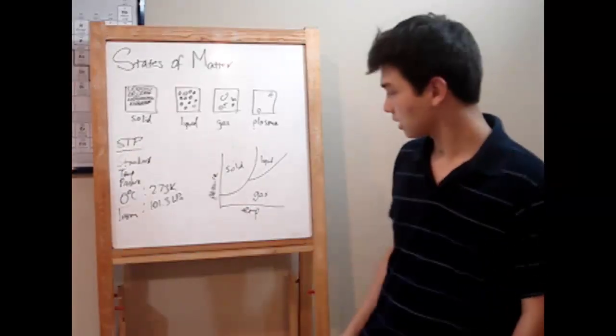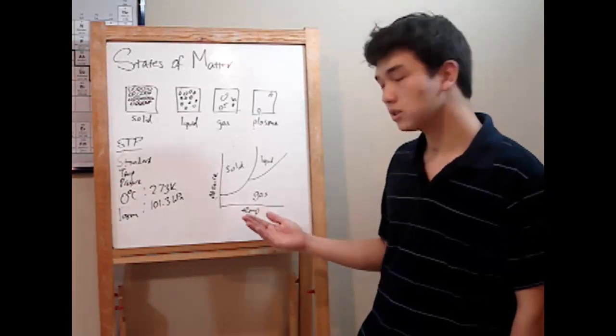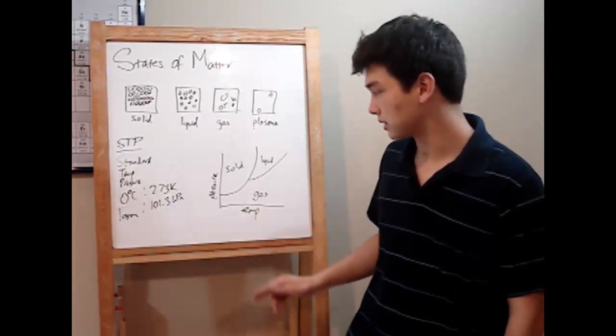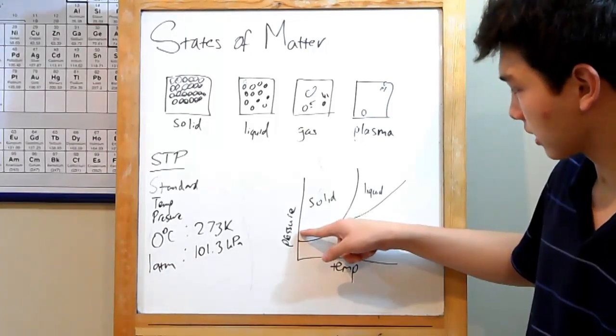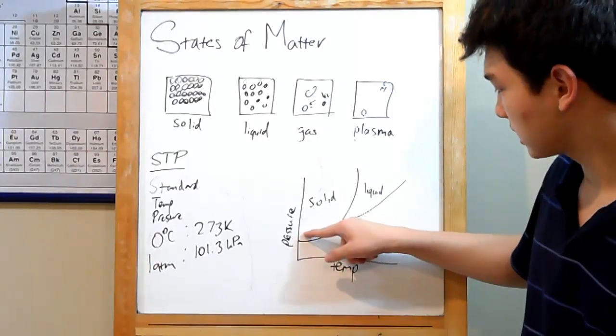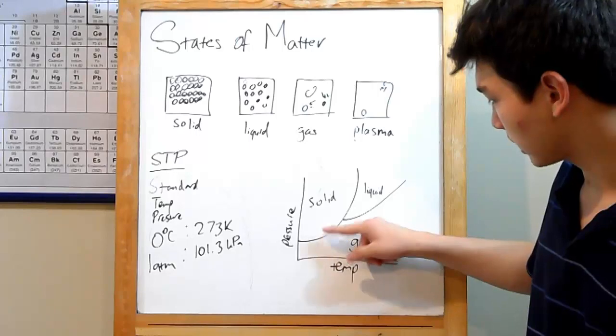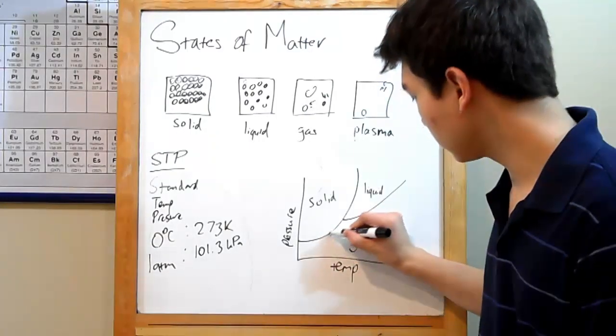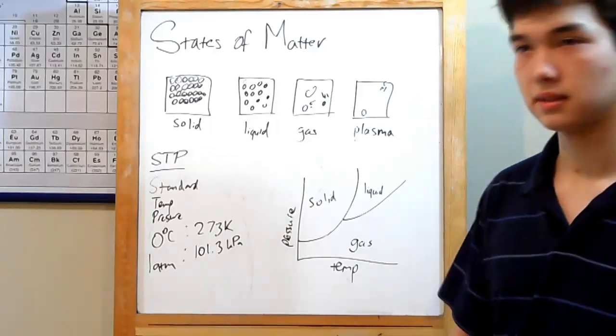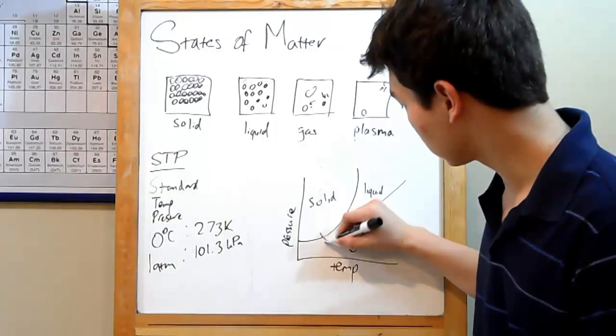How to read this thing? Well, you usually hold one of either pressure or temperature constant, like starting here, with this much pressure, as you move along increasing temperature. It will stay in a solid until you reach this point, at which point you'll go straight to a gas. That's unusual, and rarely happens. But when it does, it's called sublimation.